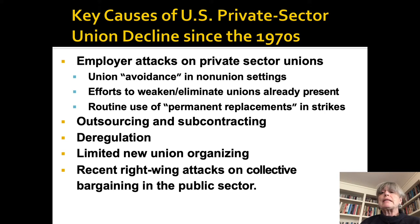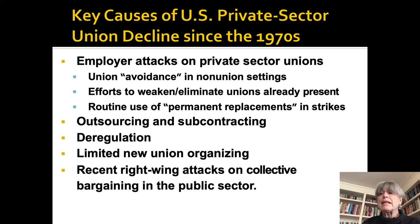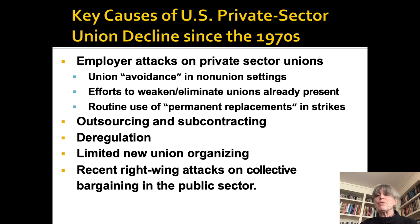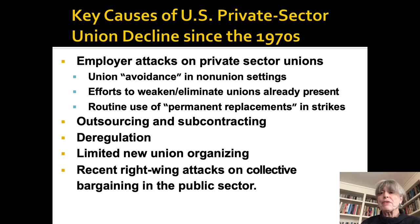Another factor is the limited extent of new union organizing. There have been spurts here and there since the mid-1970s, but unions have really been on the defensive and have not put extensive resources into that. The exception is the late 1990s when John Sweeney was elected president of the AFL-CIO in 1995 and ran on a program of organizing the unorganized. A few unions did, and there was an uptick in organizing and a flattening out of the decline in union density as a result, but that was very short-lived.